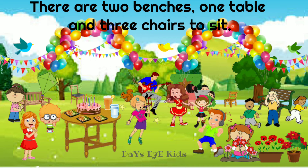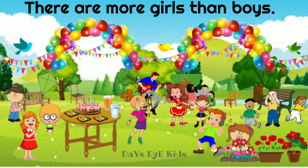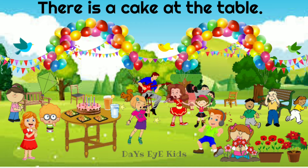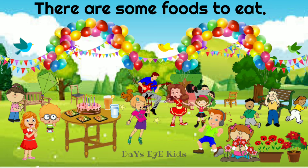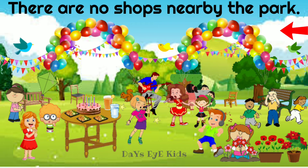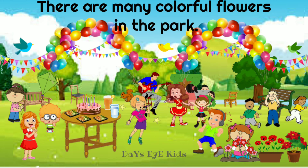There are two benches, one table, and three chairs to sit. There is a squirrel in the park. There are more girls than boys. There is a cake at the table. There is a juice glass at the table. There are some foods to eat. There are no shops nearby the park. There are many colorful flowers in the park.